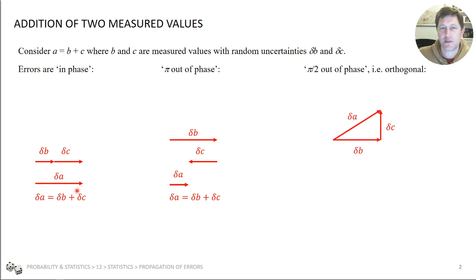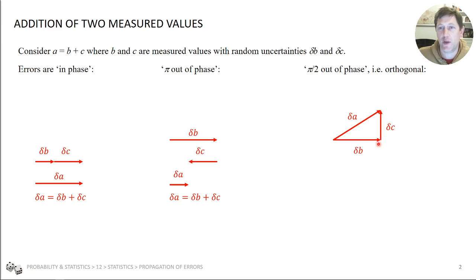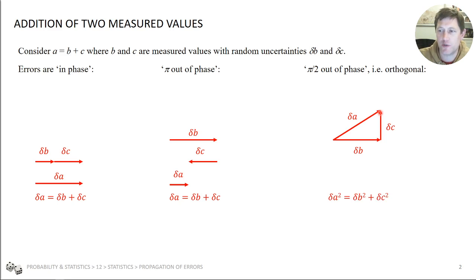If they're random errors, you would expect them not to be in phase or out of phase all the time — you'd expect them to be random. So on average they would be pi divided by 2 out of phase, halfway between the two extremes. In which case the situation would look like this: there's the error in B, there's the error in C, 90 degrees — pi over 2 — out of phase. And therefore we can visualise that would be the error in A, which means adding in quadrature: delta A squared equals delta B squared plus delta C squared.